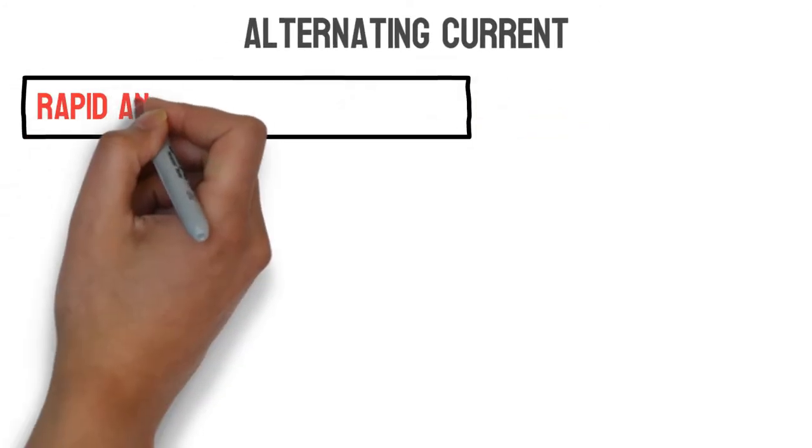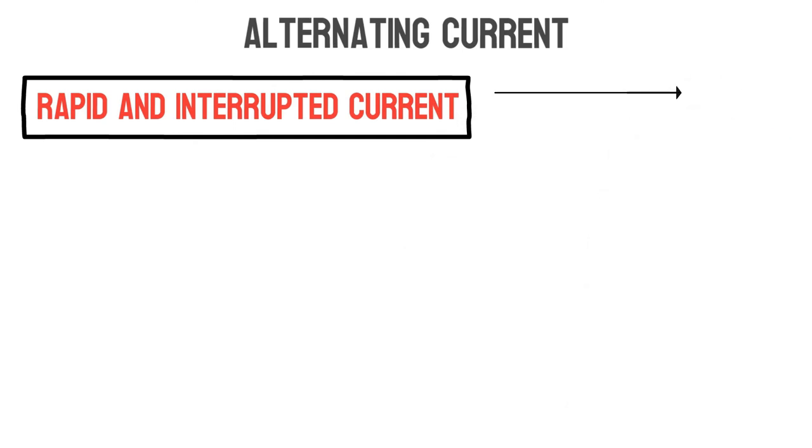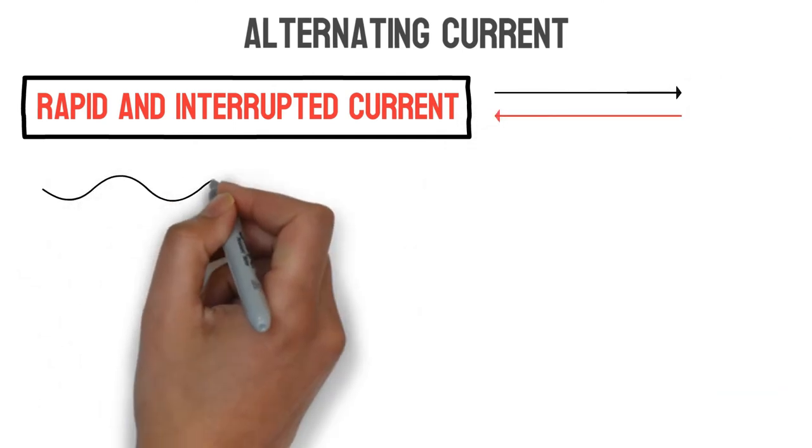Alternating current is a rapid and uninterrupted current flowing first in one direction and then in the opposite direction, that produces a mechanical action.